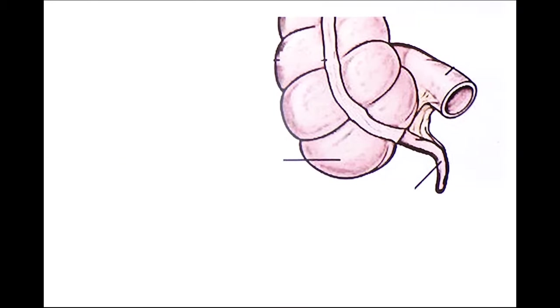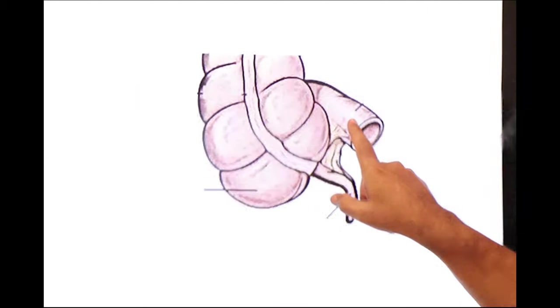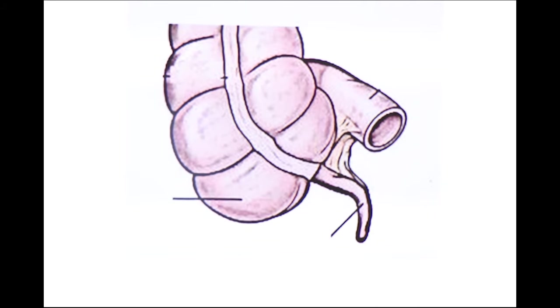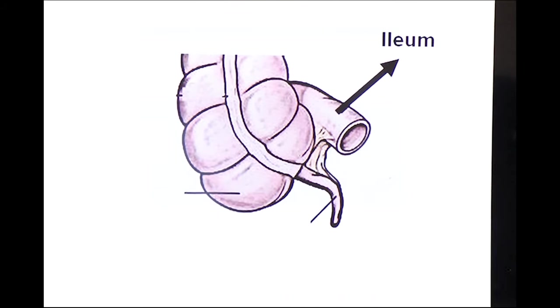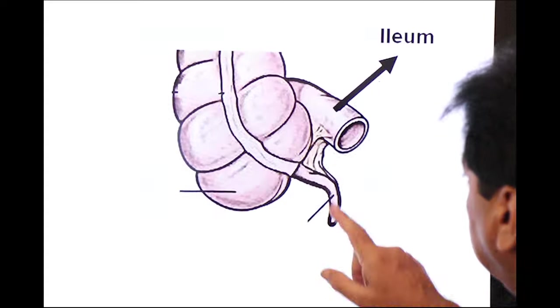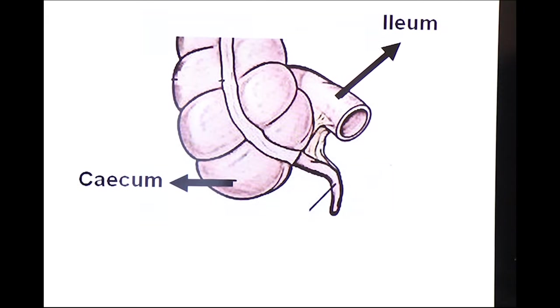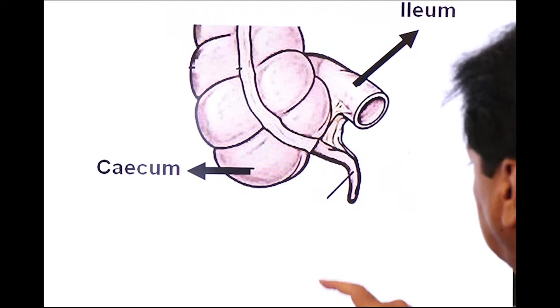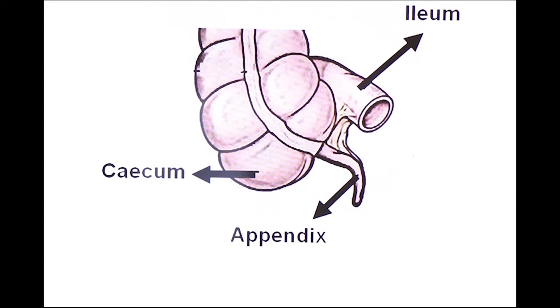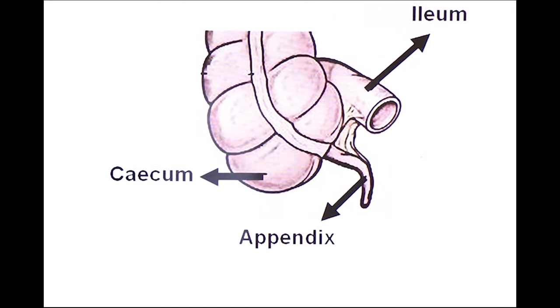Here you see the cecum is connected with a tube known as appendix. Now we have appendix. Dear students, this is ileum, this is cecum and this is appendix. From ileum the food goes to first part of the large intestine, cecum. And here you see a finger like tube known as appendix. Now what is appendix?